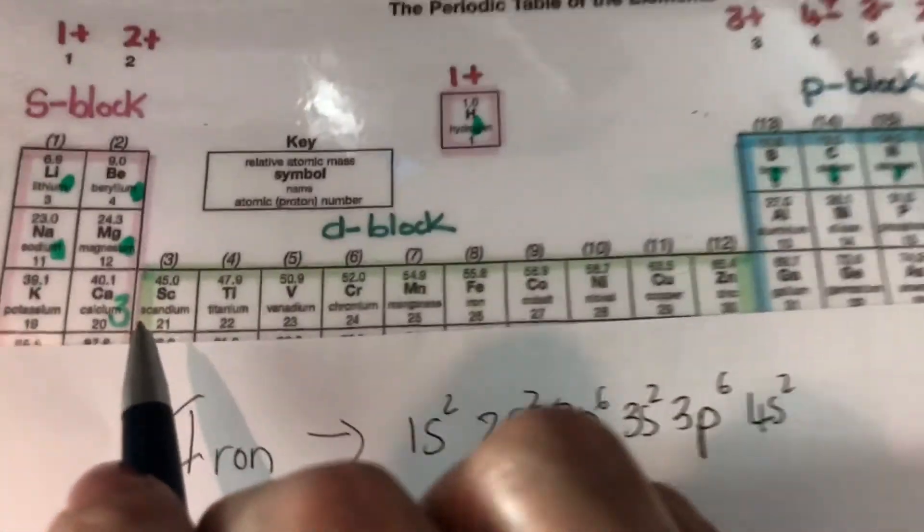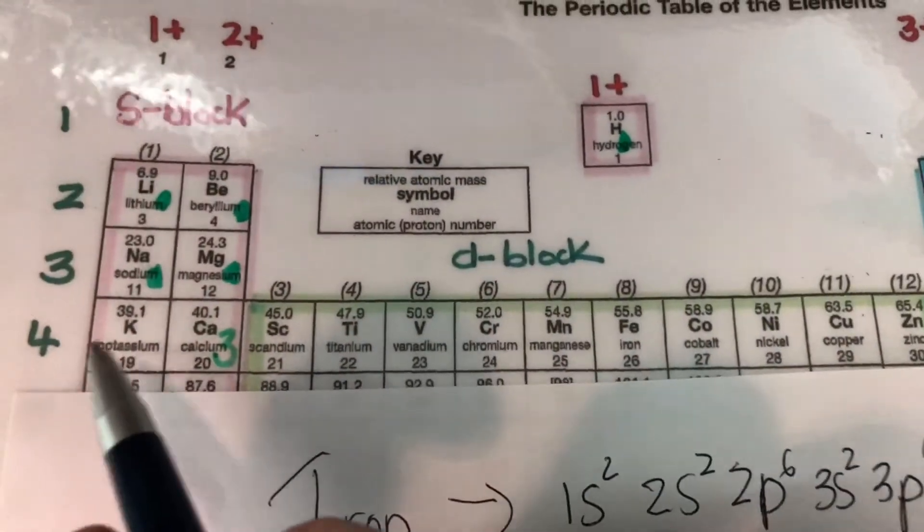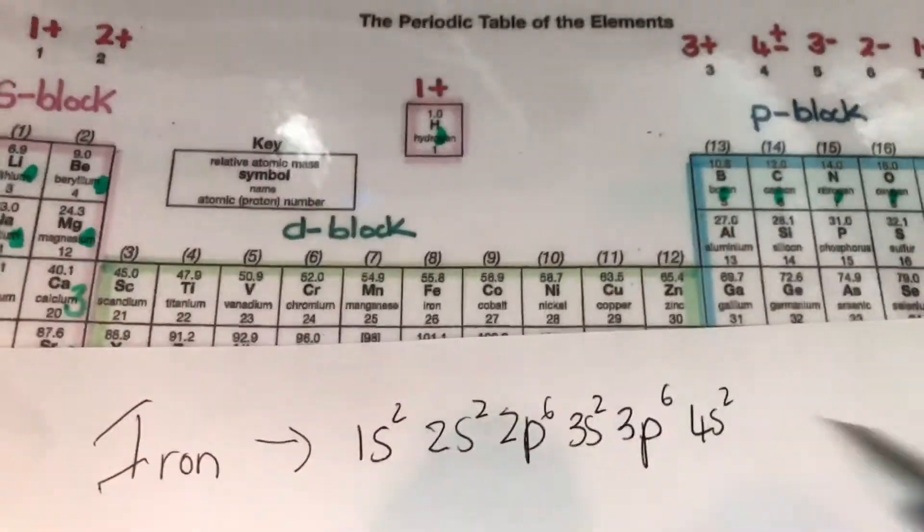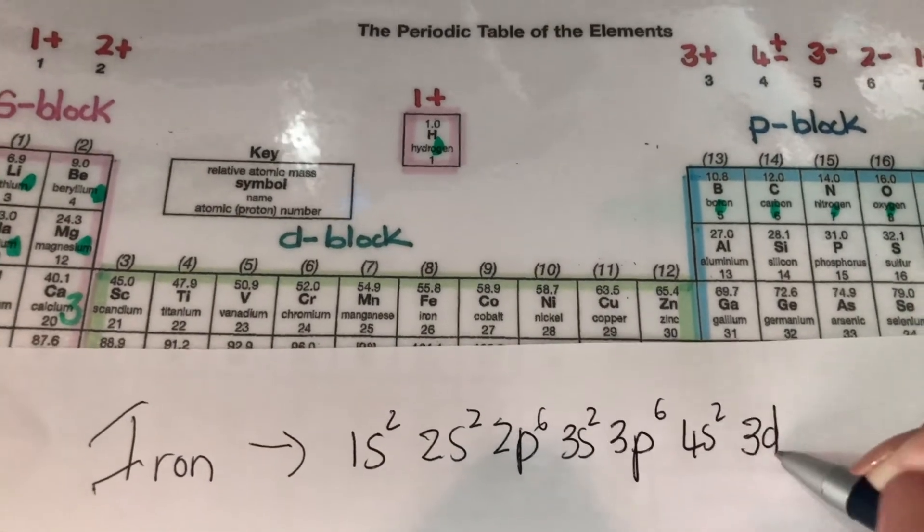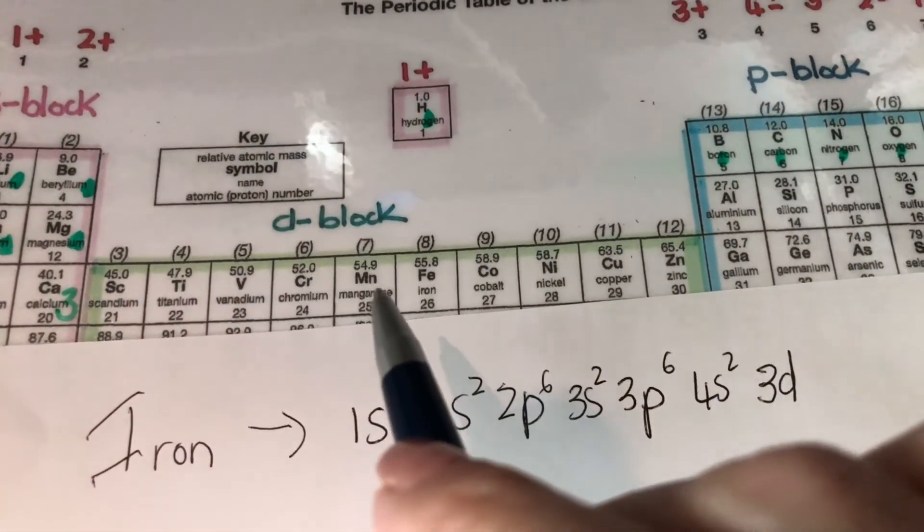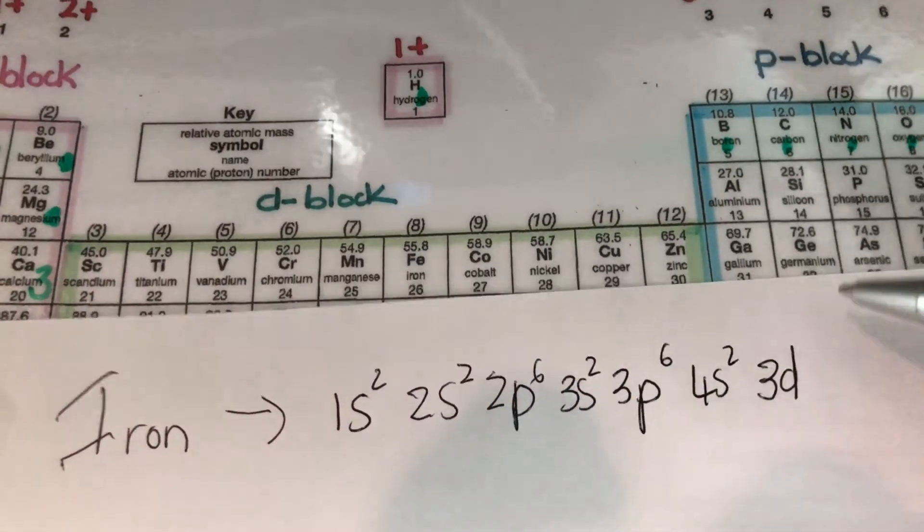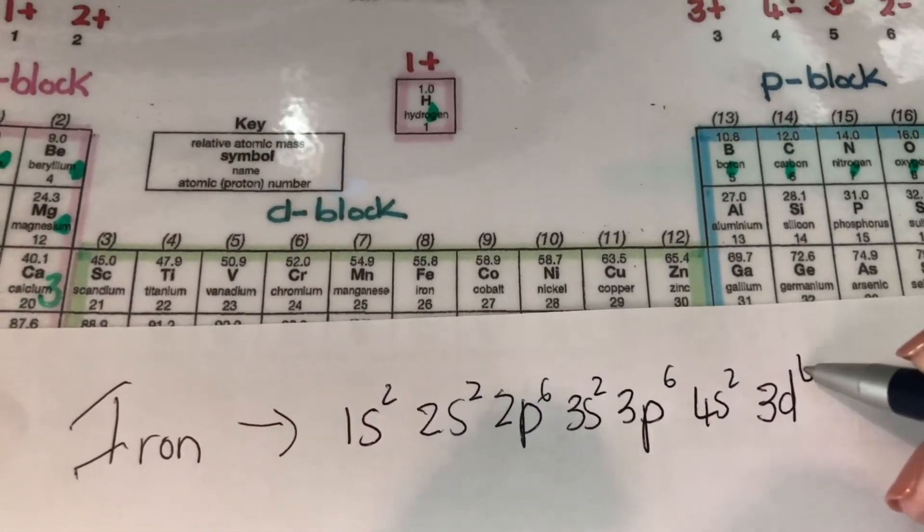But then the next one is, I've got to remember that this is not 4D, but this is actually 3D. So 3D, 1, 2, 3, 4, 5, 6. So that's when I get to iron, it will be 6.